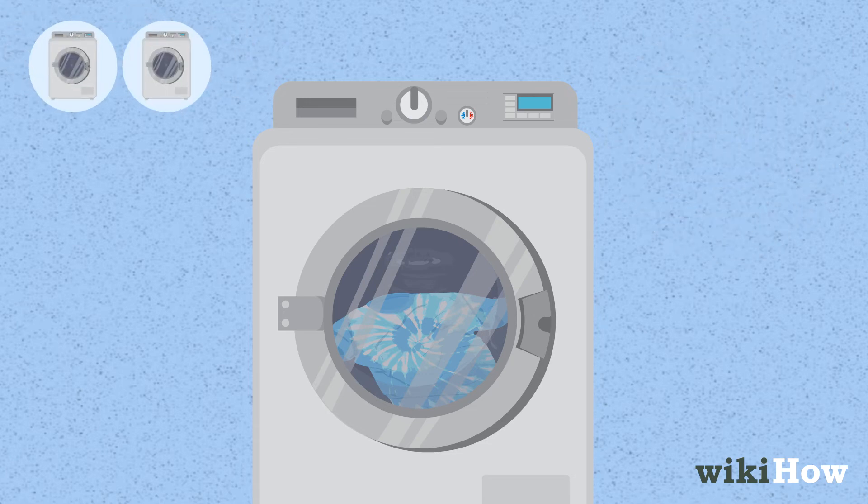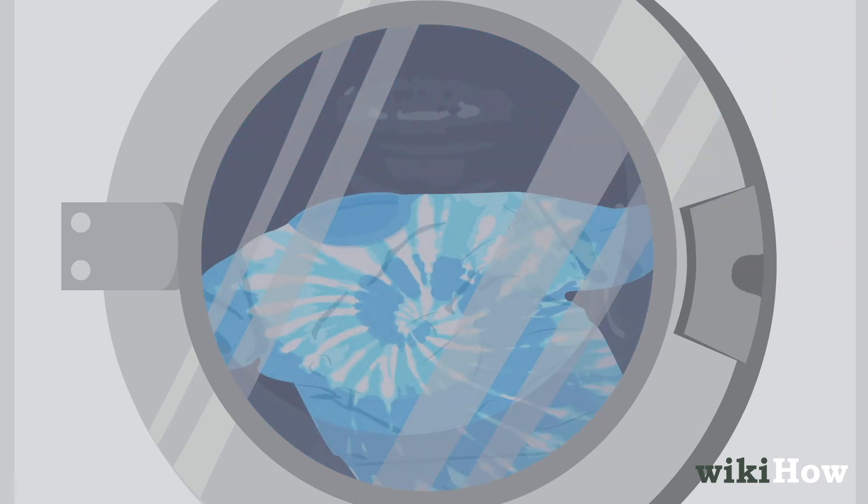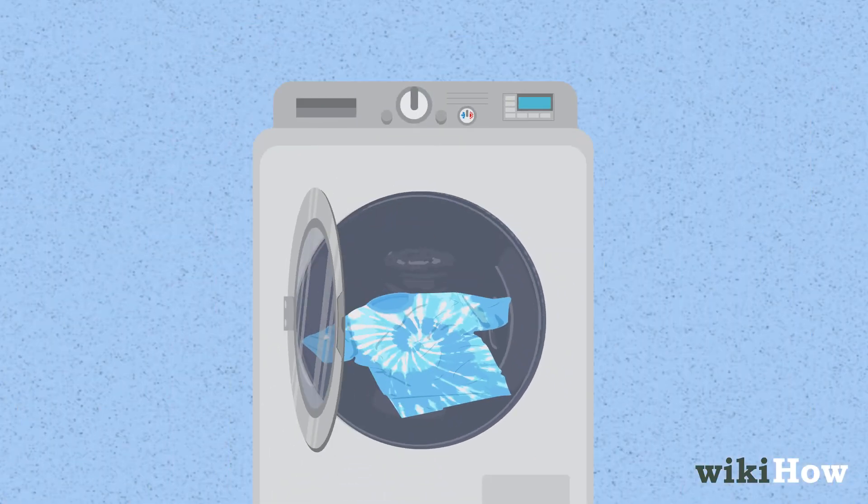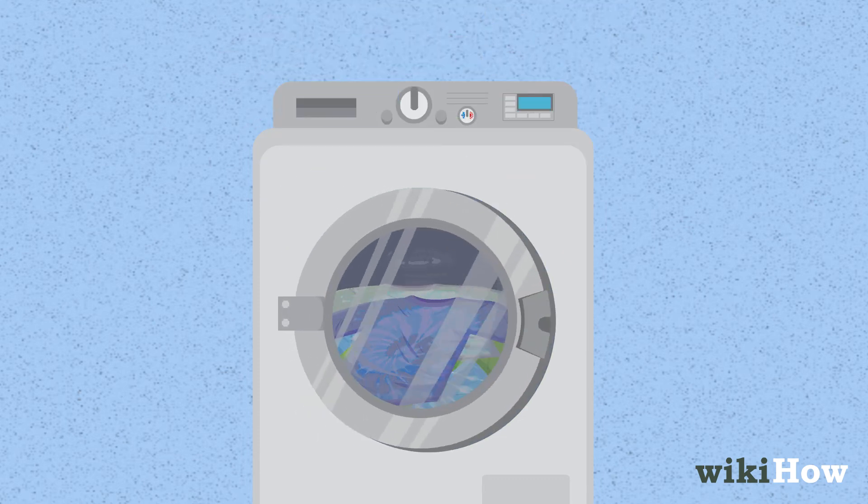The first few times you wash your tie-dyed fabric, peek into the washing machine during the rinse cycle to see if there's still any excess dye washing out. Once the water starts running clear during rinse cycles, you can begin washing the item along with your other clothes without fear of stains.